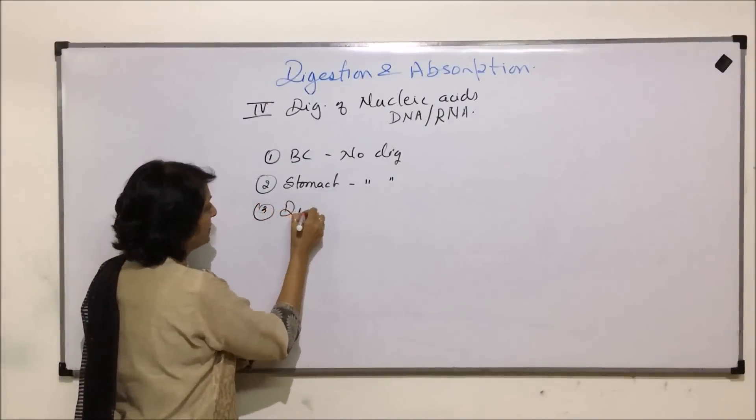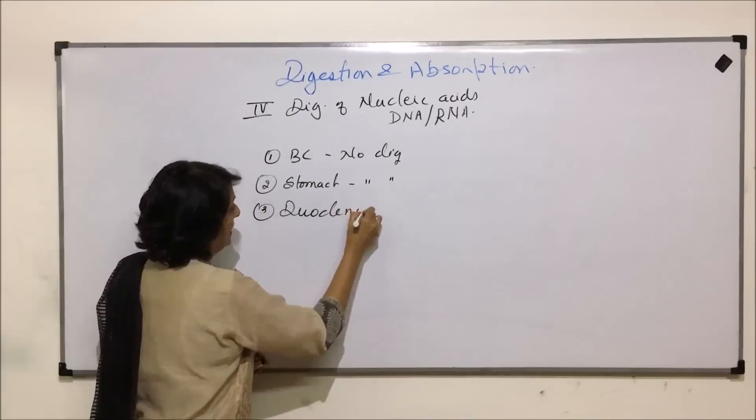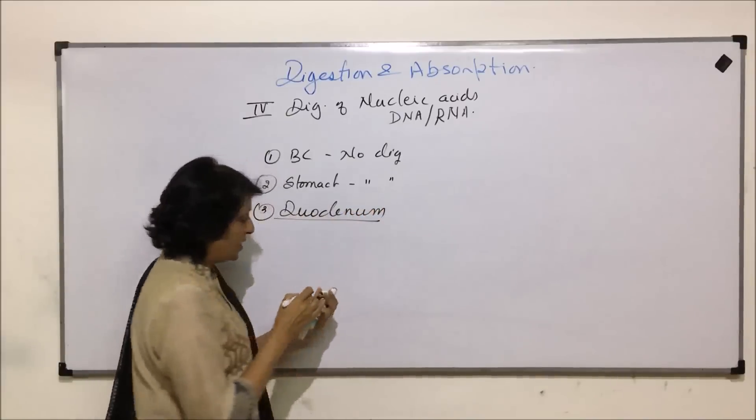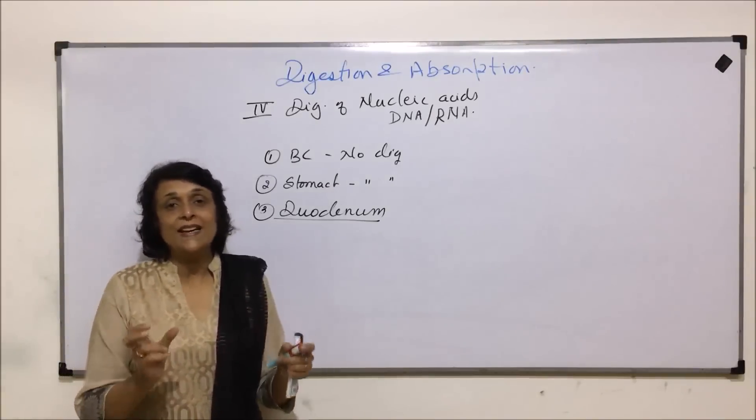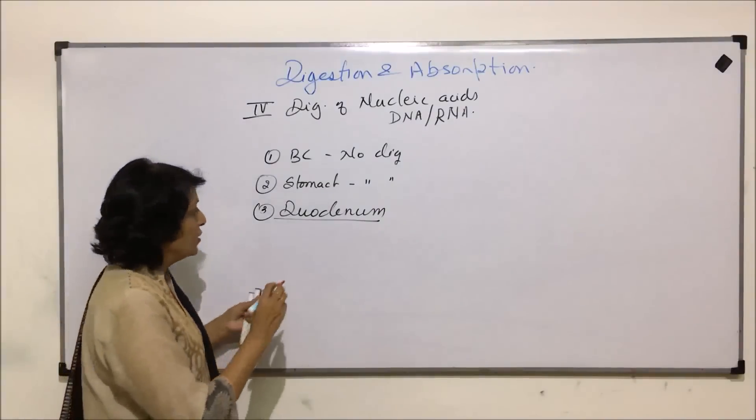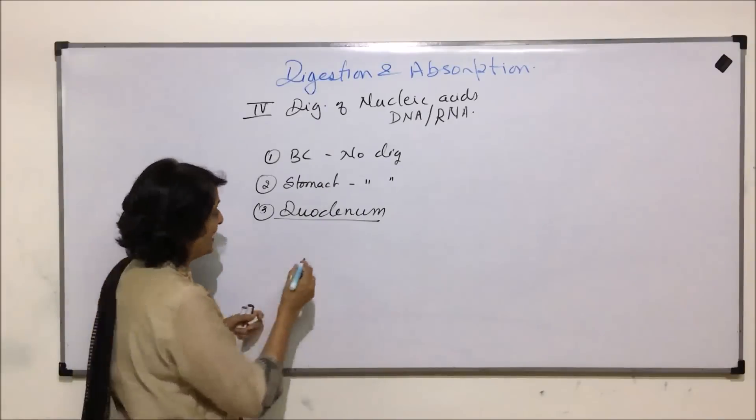Third location, duodenum. In duodenum, pancreatic juice and intestinal juice, they contain certain enzymes. So first from pancreatic juice.